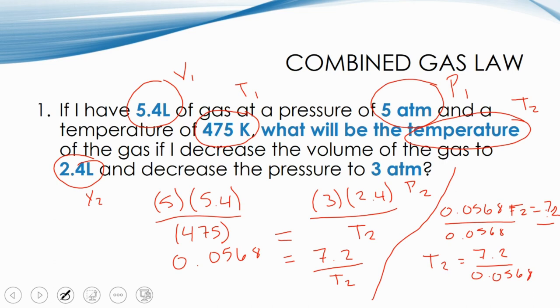And hopefully by now we've gotten really good at manipulating our numbers, just like we do in algebra class, which is one of the main reasons why algebra is usually a prerequisite for chemistry. And whenever I divide 7.2 by 0.0568, I end up with the temperature, final temperature of 126.76. And that would be in Kelvin. So that would be our final answer for this question.